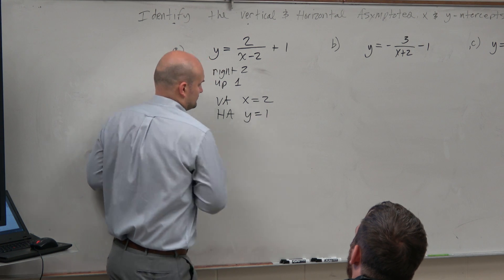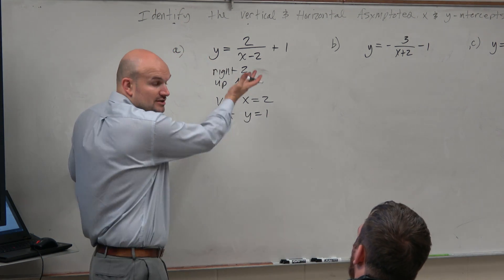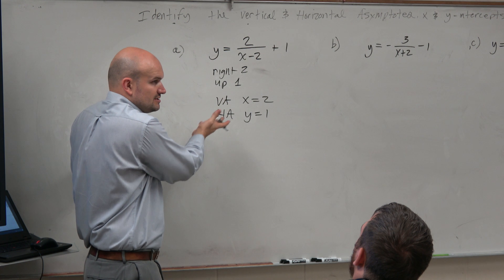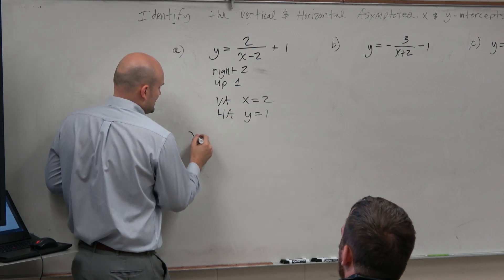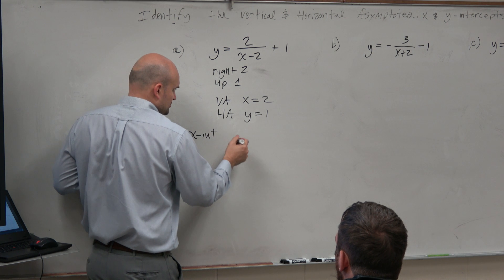So the asymptotes are the number that causes you to transform the parent function. Basic transformations. As long as you know the transformations and the parent function, then you're good. OK, now the x-intercept, y-intercept, this is probably the most difficult you'll be doing this.